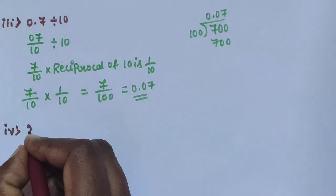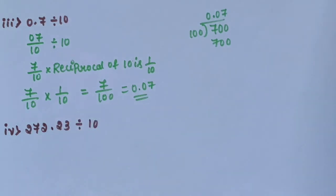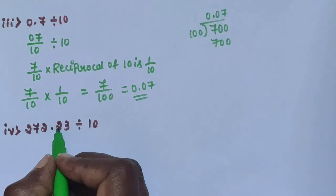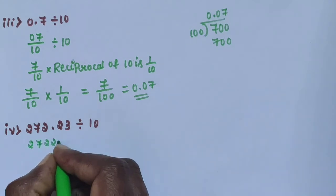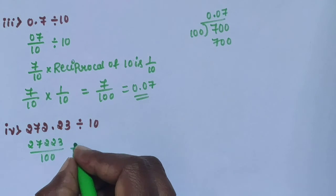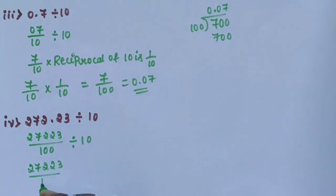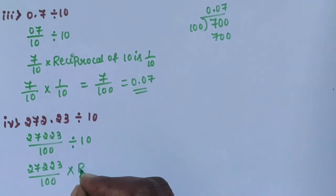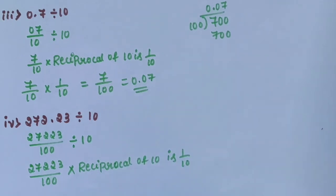Next, sub question 4: 272.23 is divided by 10. 272.23 has digits in the 10th and 100th place, so divide by 100. Write as 27223 divided by 100, then divide by 10. The reciprocal of 10 is 1 by 10.